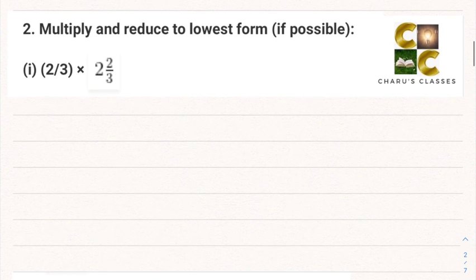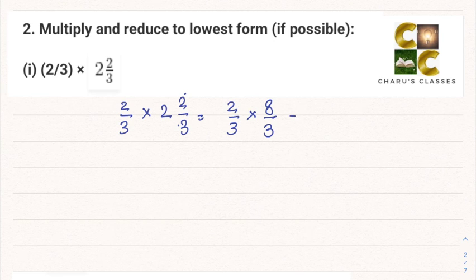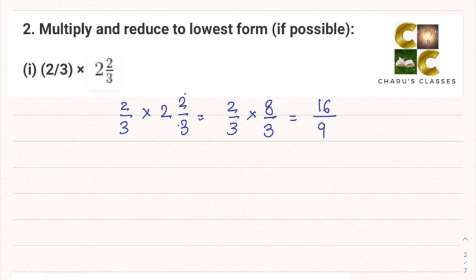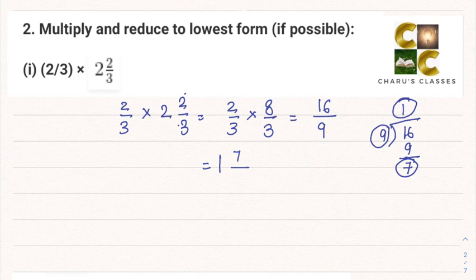Question 2: Multiply and reduce to lowest form if possible. First part: 2/3 multiplied by 2⅔. Converting 2⅔ — 2 into 3 is 6, plus numerator 2 gives 8/3 — so this becomes 2 into 8, that is 16, divided by 3 into 3 that is 9, giving 16/9. Dividing, 9 ones are 9 and the remainder is 7, so this can be written as 1 and 7/9.